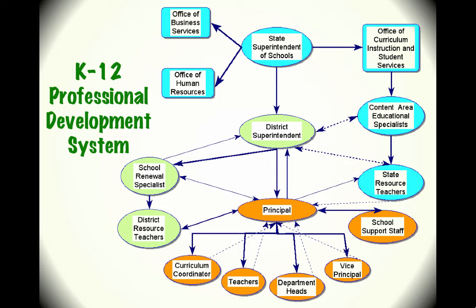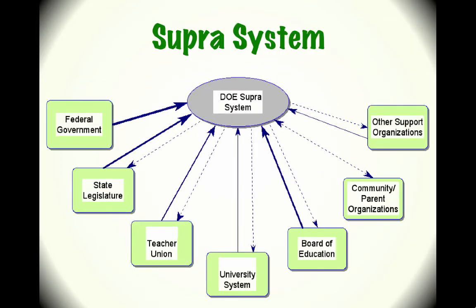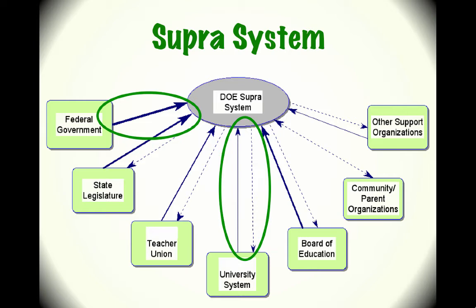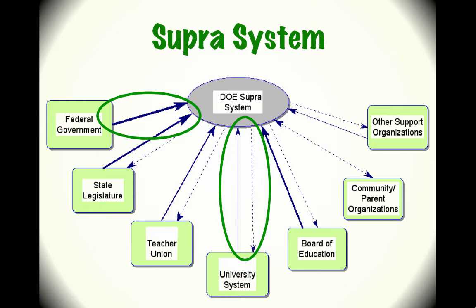At the top you have the state level, next the district level, and last the school level. Notice the different kinds of arrows that show you the direction of the communication. Here is your super system — some of these arrows are only one way, implying there is little if any feedback from the Department of Education to the federal government. The university system has a very weak line of impact or communication.